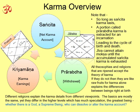So long as Sanchita Karma lasts, a portion called Prarabdha Karma is extracted for an incarnation, leading to the cycle of birth and death. A Jiva cannot attain moksha until the accumulated Sanchita Karma is exhausted. Therefore, from one birth horoscope, it is not possible to say with a hundred percent certainty that the person will get moksha. All the dictums which say a person goes to moksha are only telling the direction in which you are going — they cannot guarantee you are reaching the destination.